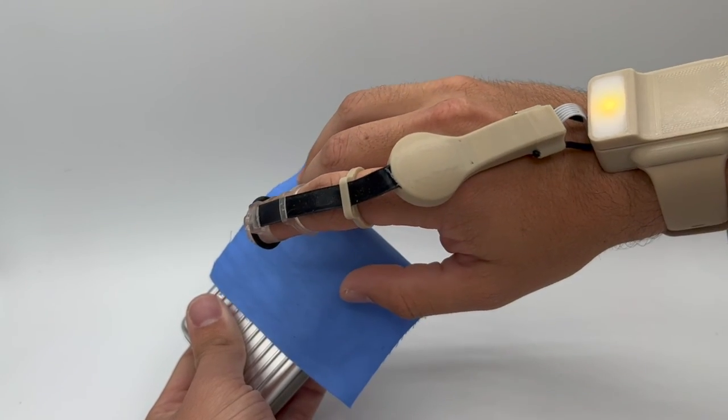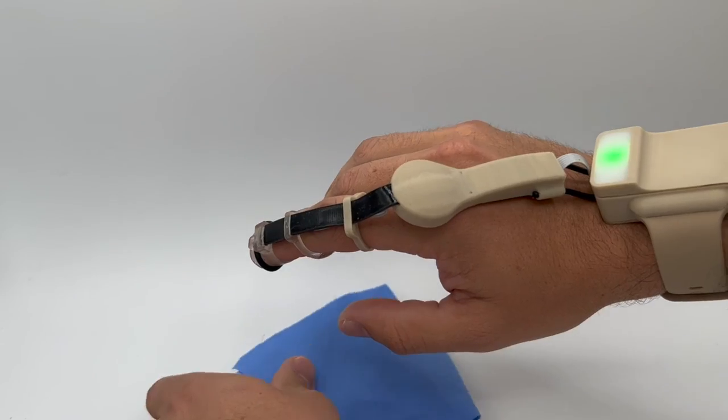As the user slows or reduces their finger activity, the state will change back to yellow and green.